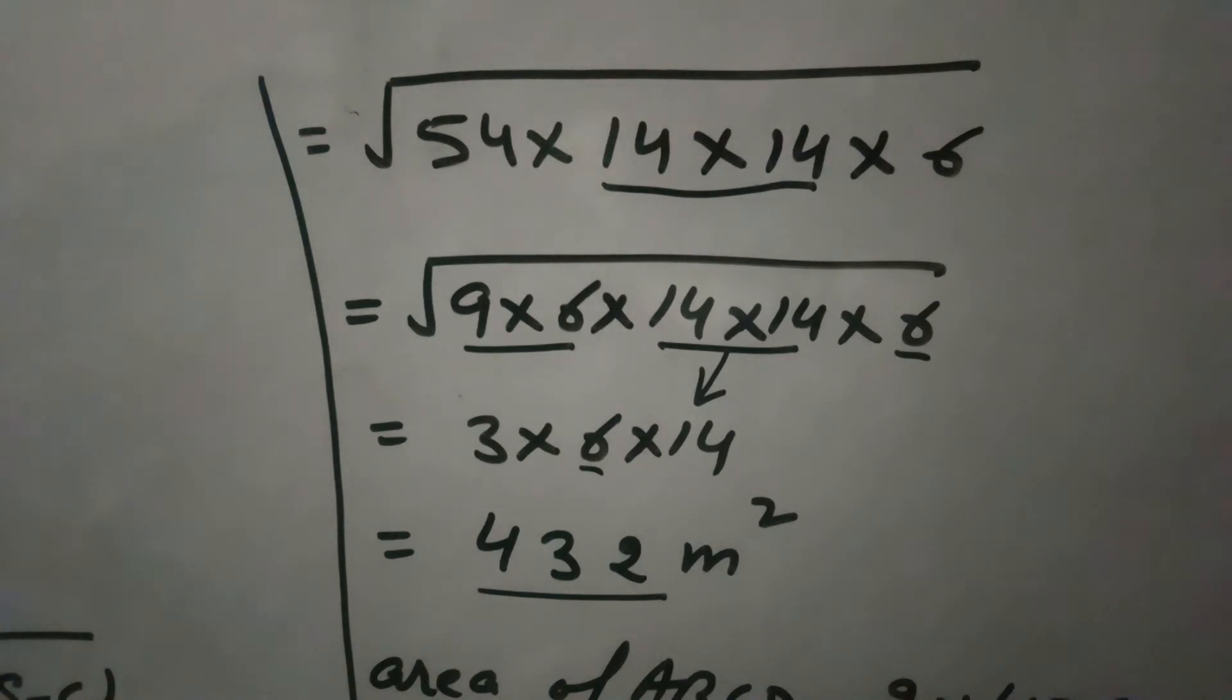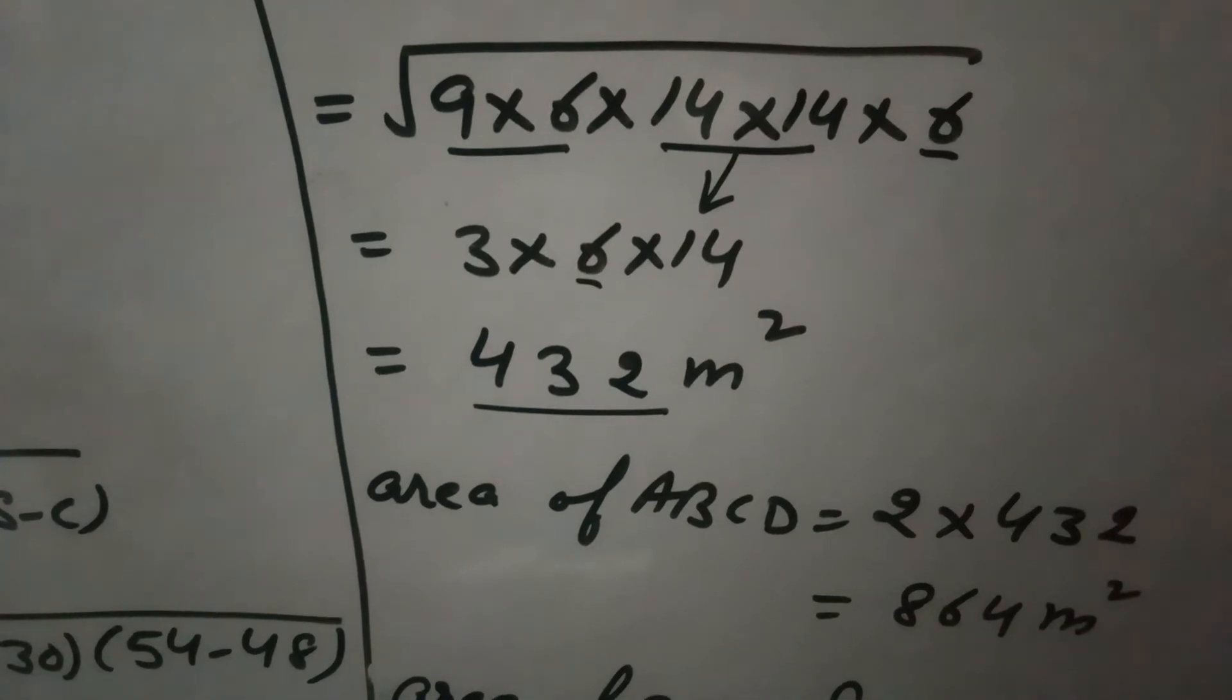Because this is a rhombus, the area of rhombus ABCD will be double the area of triangle ABC. So area of this rhombus ABCD equals double of 432, which equals 864.